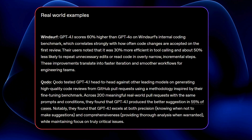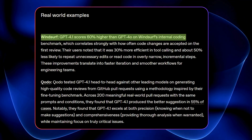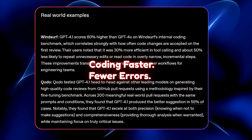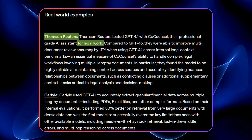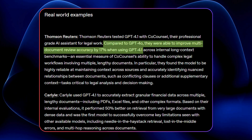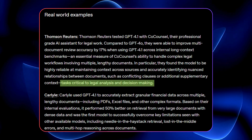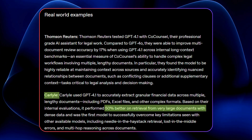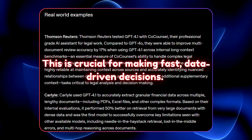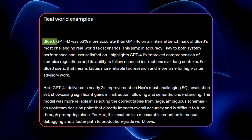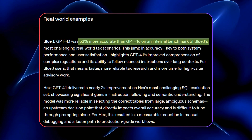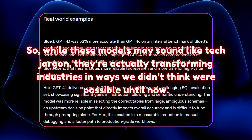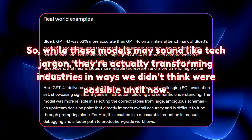So what's all this tech talk actually doing in the real world? Let's look at some real-world numbers. Windsurf saw a 60% improvement in internal coding benchmarks, meaning their team is now coding faster and with fewer errors. Thomson Reuters, using these models for legal reviews, got a 17% improvement in accuracy for multi-document reviews — a pretty big deal for lawyers dealing with complex contracts. Carlisle, a financial firm, saw a 50% improvement in extracting financial data from documents, crucial for making fast data-driven decisions. And Blue Jay, which specializes in tax law, reported a 53% improvement in accuracy for handling large documents and difficult tax scenarios. These models are actually transforming industries in ways we didn't think were possible until now.